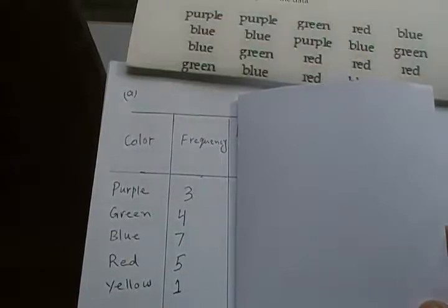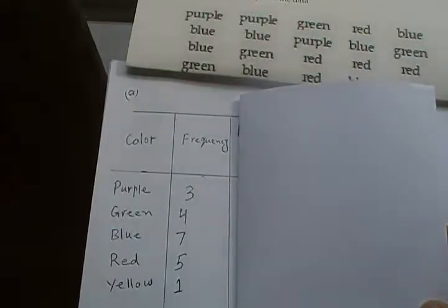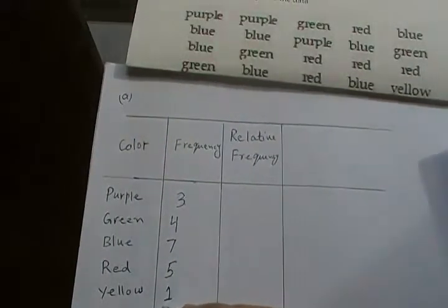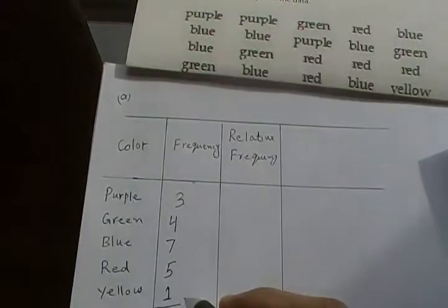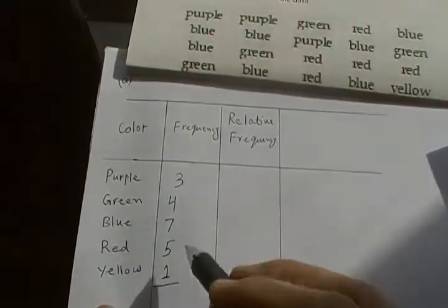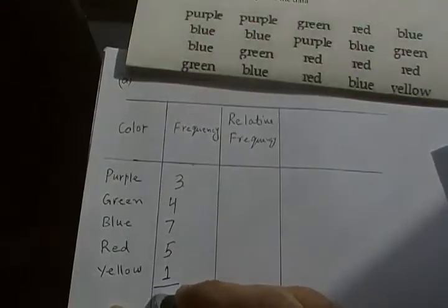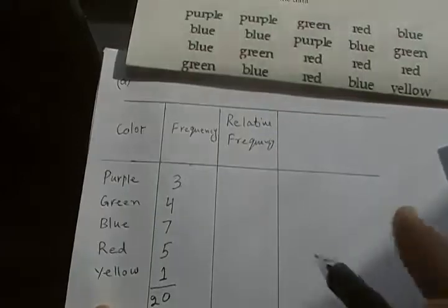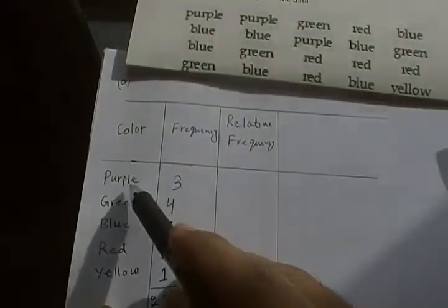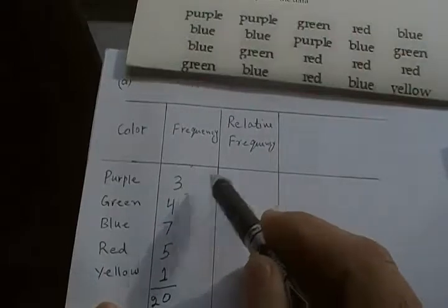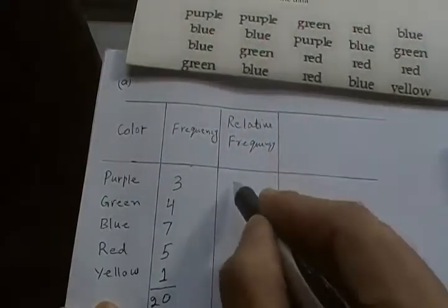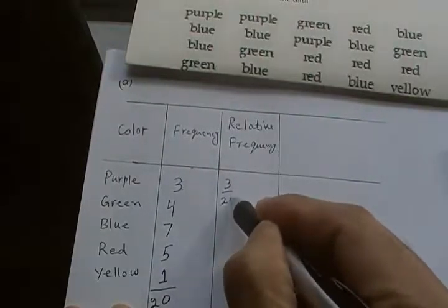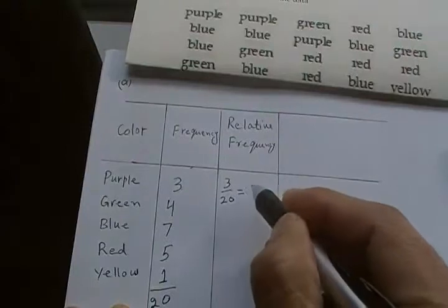We are also asked to construct a relative frequency distribution. First sum this up - how many total number of colors are there? If you add this up it's 20. Relative frequency means, for example, purple has a frequency of 3, so relative means 3 out of what - that is 3 out of 20. We would write as 3 out of 20, and if you write in terms of decimals that would be 0.15.